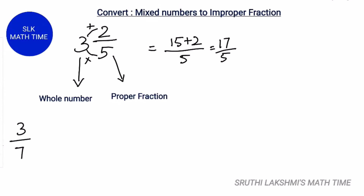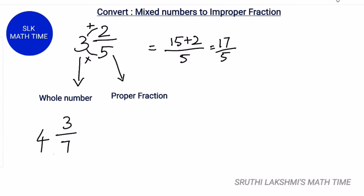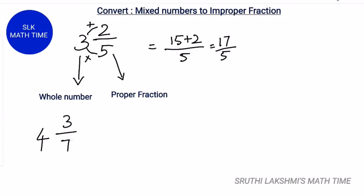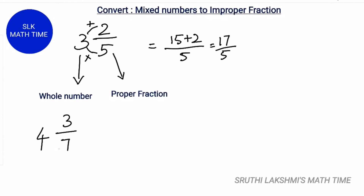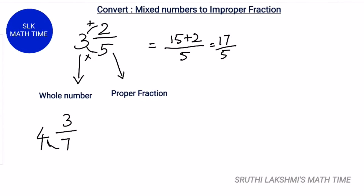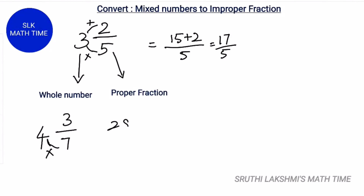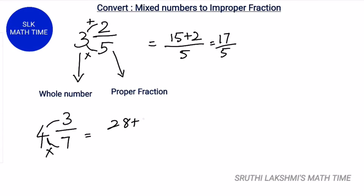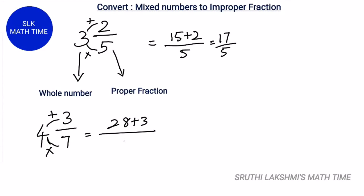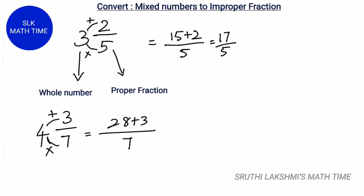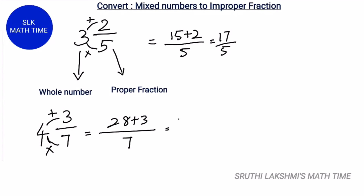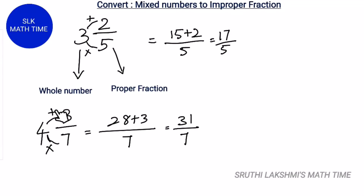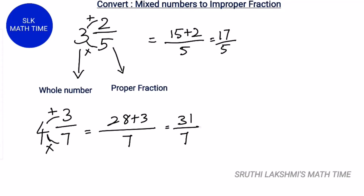Let's see another example: 4 and 3 by 7. Here, 4 is the whole number and 3 by 7 is the proper fraction. We multiply the denominator by the whole number: 7 times 4 is 28, then add the numerator, which is 3. So, 28 plus 3, divided by 7. 28 plus 3 is 31 by 7. So when we convert the mixed number 4 3 by 7 to an improper fraction, we get 31 by 7.